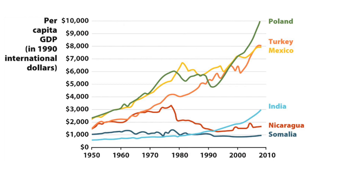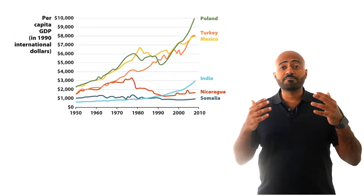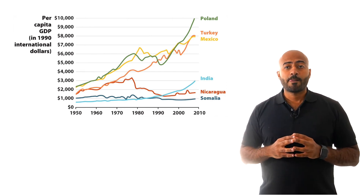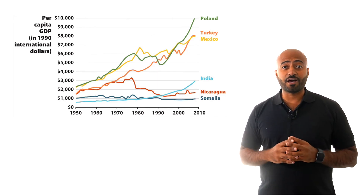Let's look at Nicaragua. Something happened around 1979–1980: in a short time period, income per person fell from $3,000 per year to $2,000. That's a steep decline in living standards in such a short time frame — and more importantly, living standards never recovered. What happened in Nicaragua? Looking at these graphs makes you curious and want to learn more.